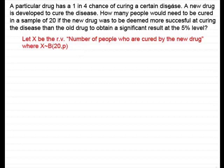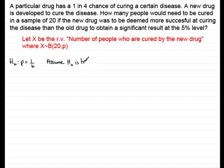If there is no change in the proportion of people being cured, we set that as our null hypothesis H0: that the proportion P remains at one quarter. Assuming H0 is true, then X is binomially distributed with 20 trials and probability of success P equal to one quarter.